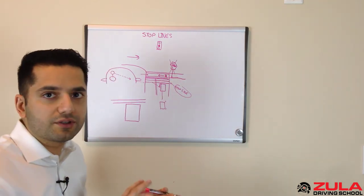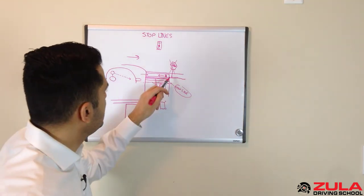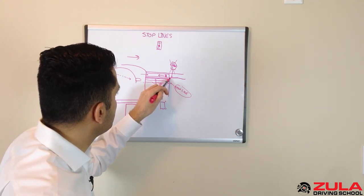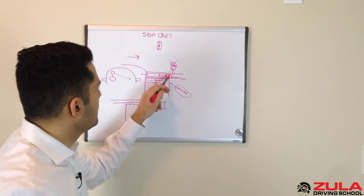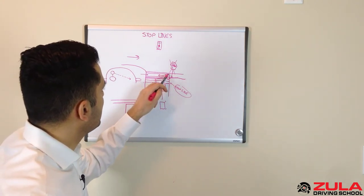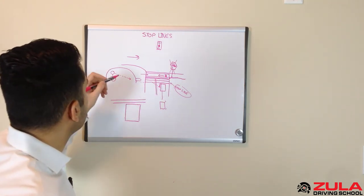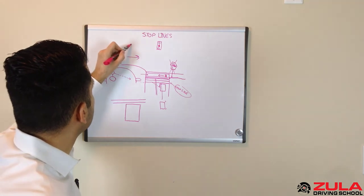So if there are no stop lines, no crosswalks, then you need to stop at the edge, the closest edge of the sidewalk to you. And if there's none of these, then you can go right up to the edge of the road and make your first stop there. So that would be your stop line there.